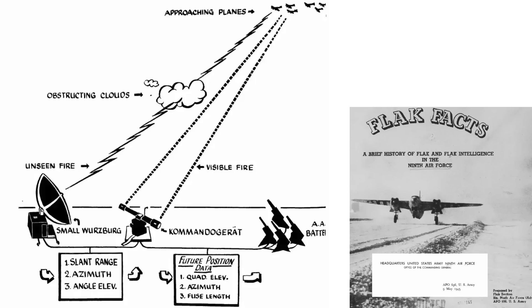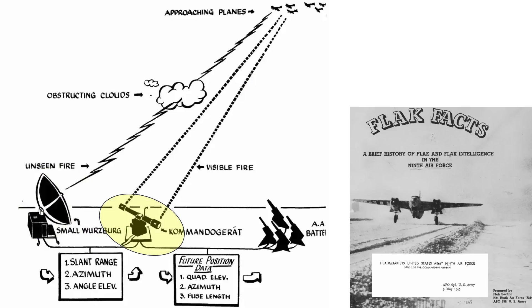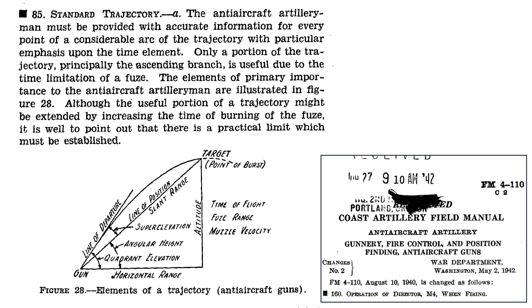This image represents components and integration of a German flak battery from a May 1945 Headquarters 9th Air Force document titled Flak Facts. B-17 bombers approach at altitudes between 20,000 and 30,000 feet. The small Würzburg radar and/or optical directors pick up the formations out to 25 miles, feeding the director the formation's slant range, azimuth, and elevation. The director estimates the bomber's future position in the sky, and batteries are relayed the flak gun's quadrant elevation, azimuth, and fuse setting.